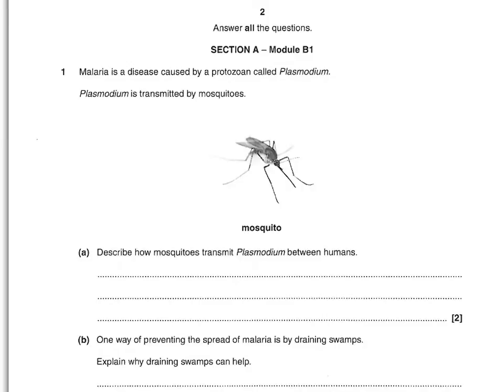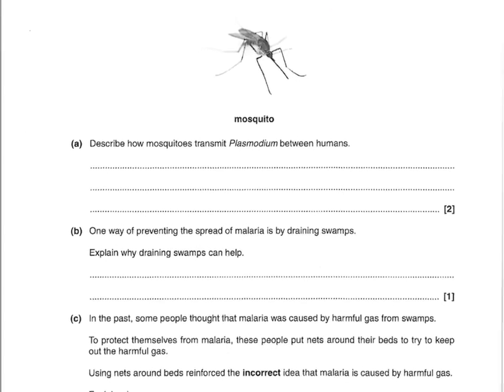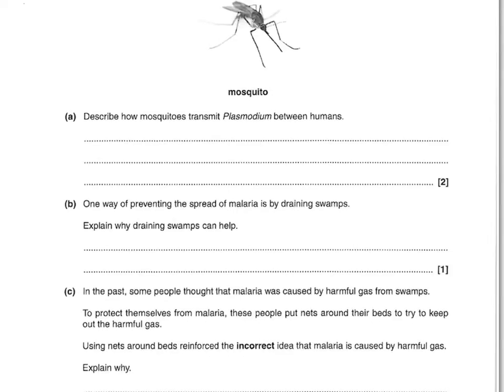So first the biology section. It says malaria is a disease caused by a protozoan called plasmodium. Plasmodium is transmitted by mosquitoes. Describe how mosquitoes transmit plasmodium between humans. What you've got to say here is that the mosquito will bite a person — you can say pierce or inject — and then the plasmodium gets in via the blood. As long as you say it bites a person and it gets into the blood, that's those two marks.